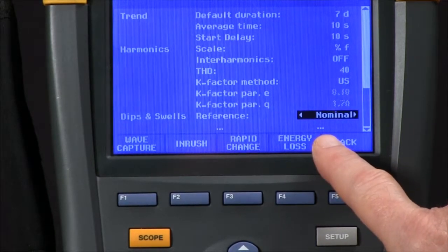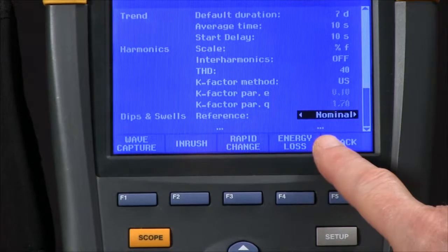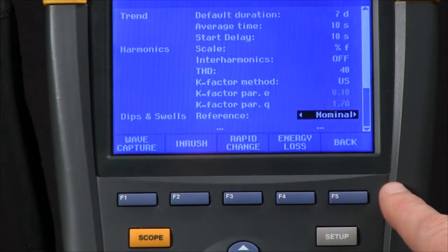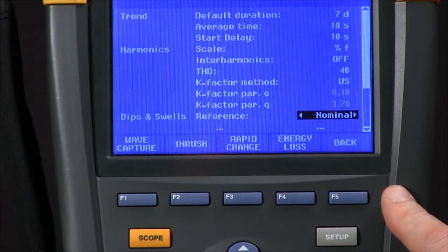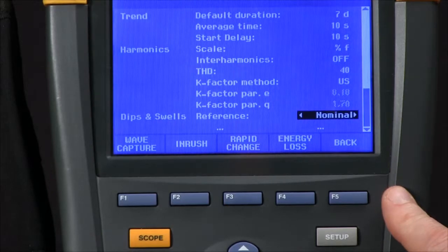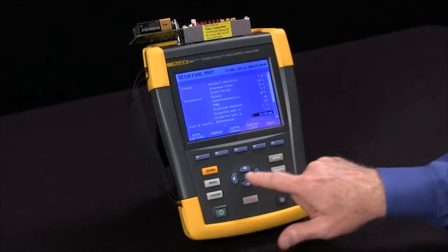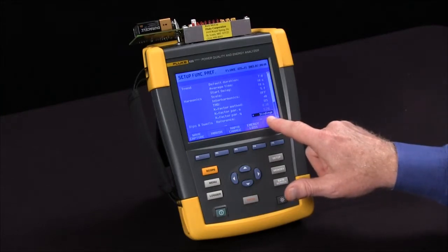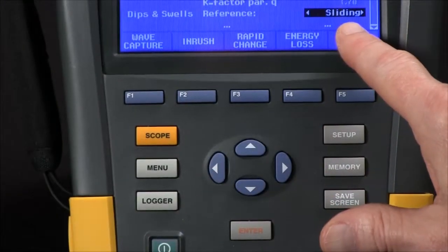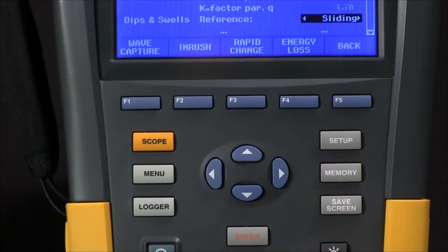But let's say your voltage isn't really 120 volts, it's 115 or 110. If we want to have the nominal of the actual voltage be the reference, we get the arrow key to select sliding. It will take that measured voltage as the reference and use that for all event capture.